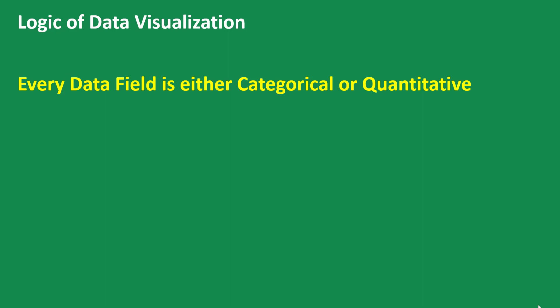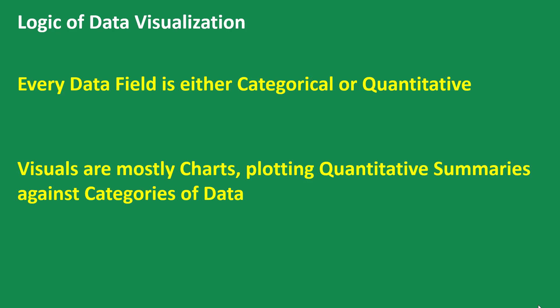So that's the first thing to consider: you want to look at your data and categorize every single field or column as either categorical or quantitative. Our charts are going to plot quantitative summaries against the categories of data. So if one field is categorical and another is quantitative, you visualize by summarizing the categorical information by the quantities.